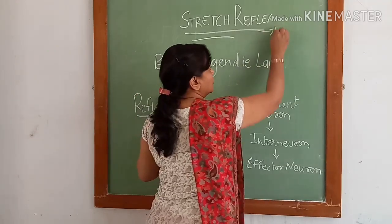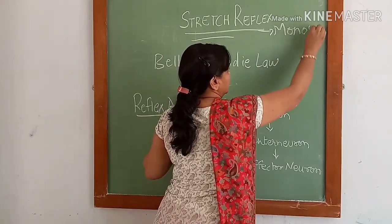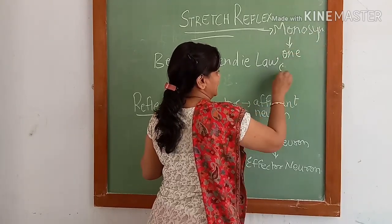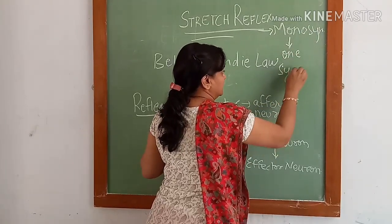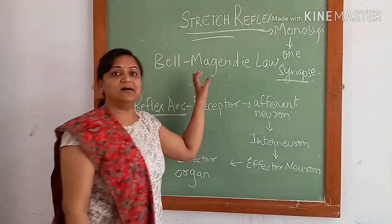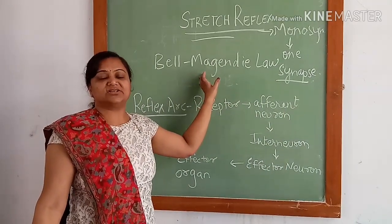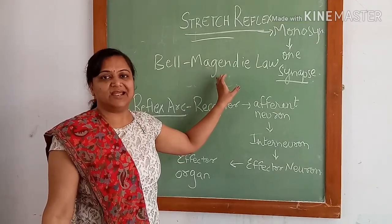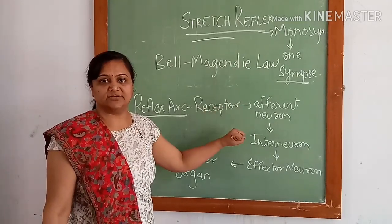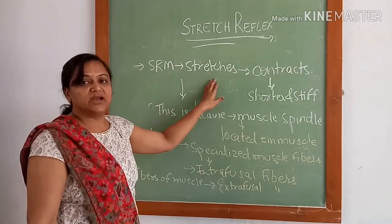Stretch reflex is a monosynaptic reflex — that is, it involves only one synapse. The classic example of this is the knee jerk reflex, where when we stretch the quadriceps muscle it responds by contraction.